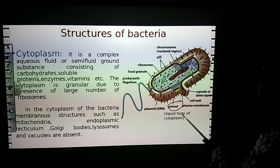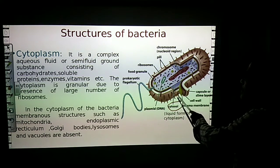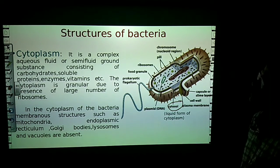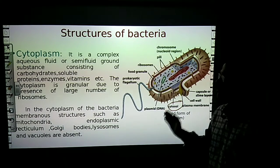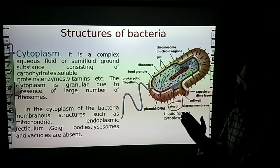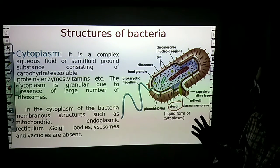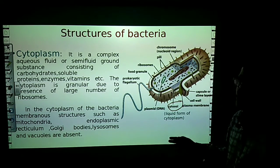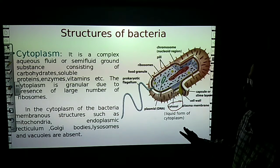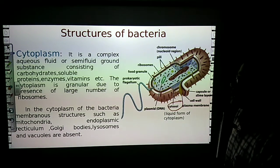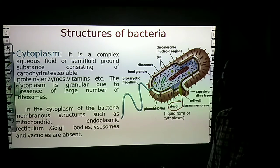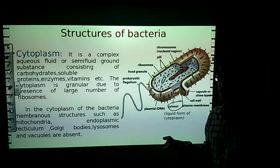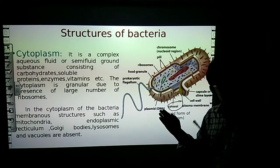The cytoplasm is the main part of the bacterial cell. It is a complex aqueous fluid or semi-fluid — a ground substance consisting of carbohydrates, soluble proteins, enzymes, vitamins, and nutrients found inside the cell. The cytoplasm appears granular due to the presence of a large number of ribosomes.